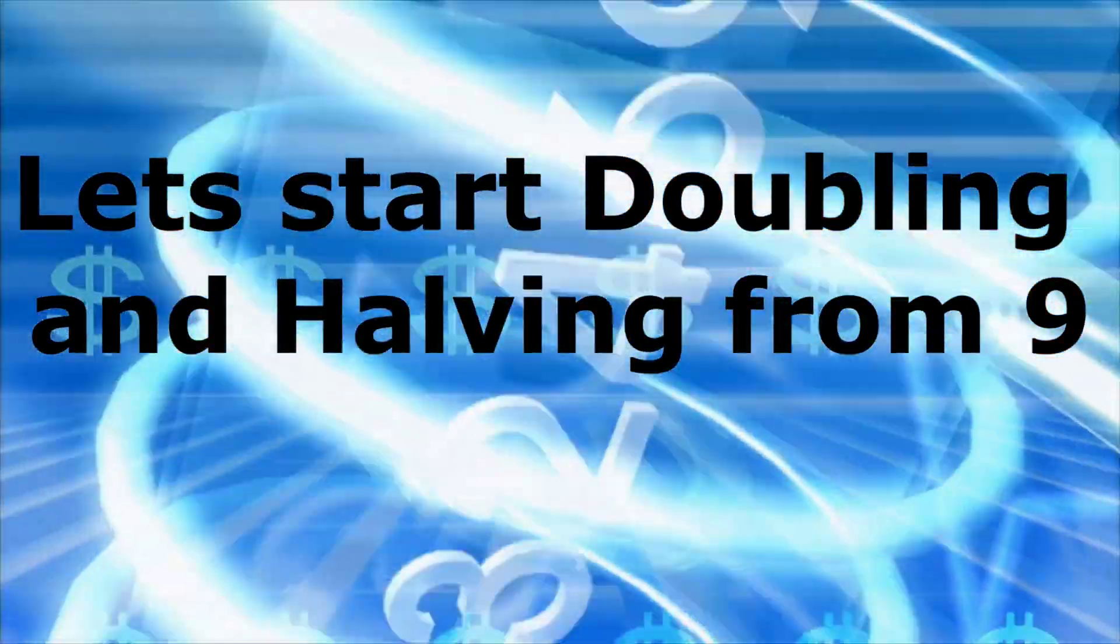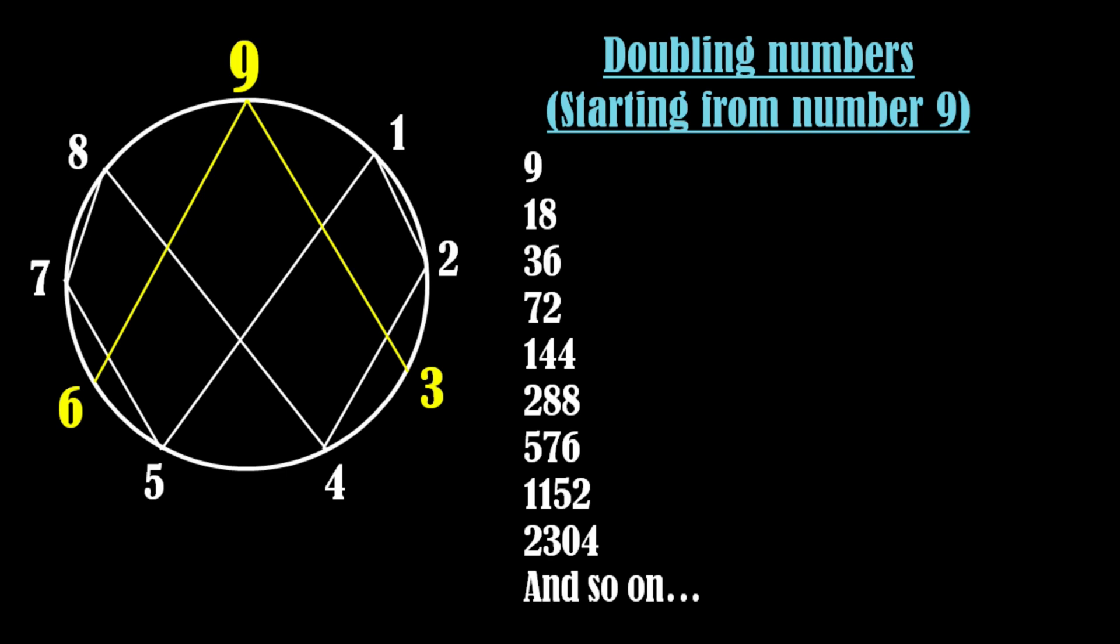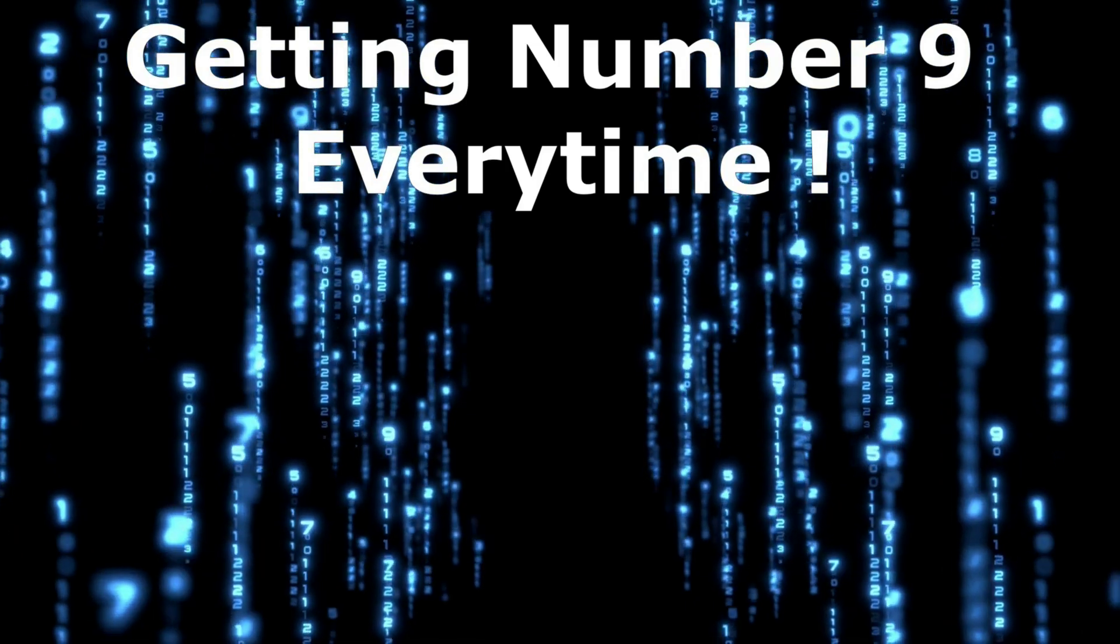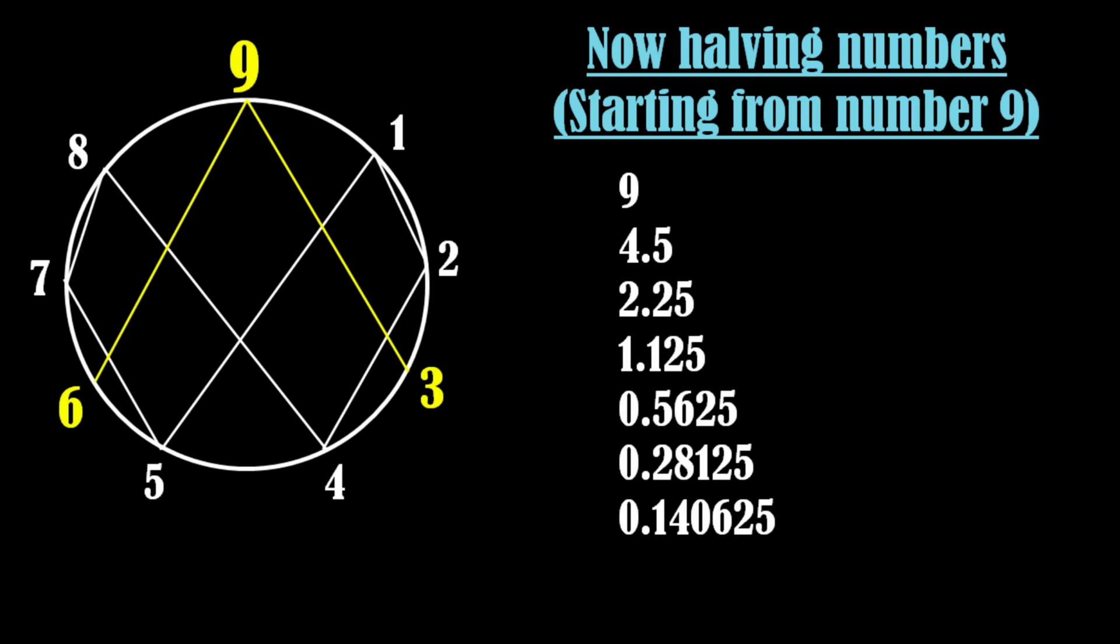We will get incredible results when we start doubling and halving the numbers from number 9. We are getting only a single number, number 9 every time. What will happen if we halve the numbers repeatedly starting from number 9? What do you see? We are getting number 9 every time. No other number is present in the sequence.